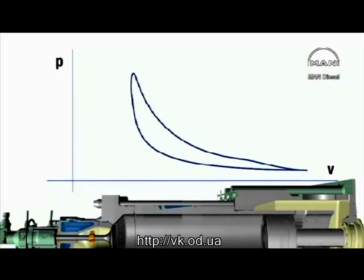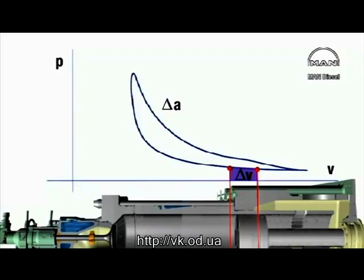If the piston travels a short distance further, corresponding to delta V, and if we ignore the minimal change in pressure, the amount of work done, delta A, will be given by the pressure multiplied by the change in volume, or P times area below the part of the compression line corresponding to delta V, and the same applies to every single part of the compression curve.